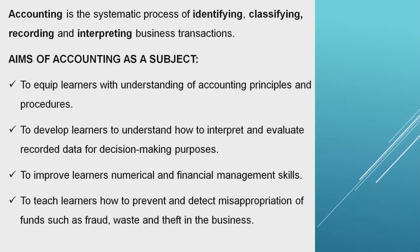It first starts with identifying a business transaction that takes place in the business, either by check or with cash. Then we classify this transaction — was it a petty cash transaction, a credit transaction, or a cash transaction? — so that we know where to record it in the books of first entry. Then we record and later interpret, because we want to see how the business is performing.